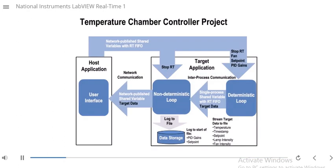Now you can share latest data over the network using network published shared variables. Next, we will describe characteristics of a network stream and establish a network stream connection.